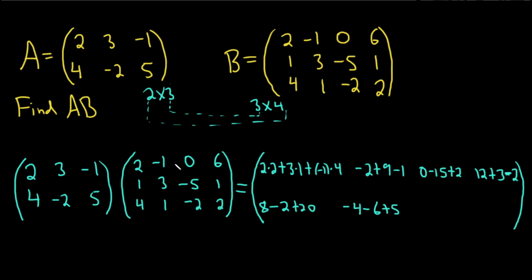Now the second row, third column: 4 times 0 is 0, negative 2 times negative 5 is 10, and 5 times negative 2 is negative 10.